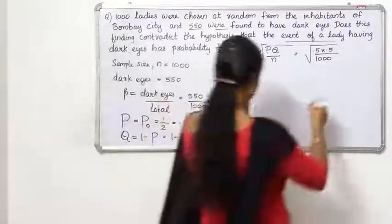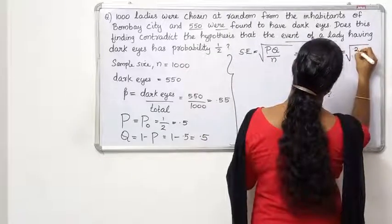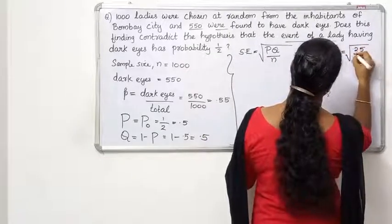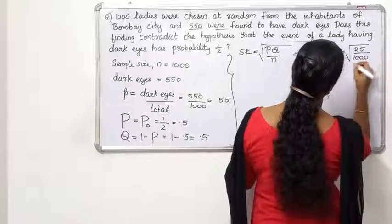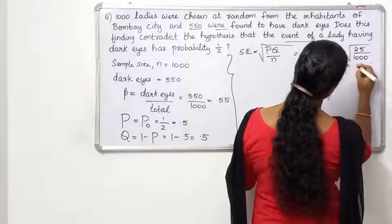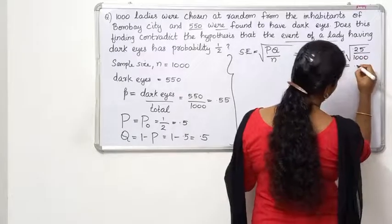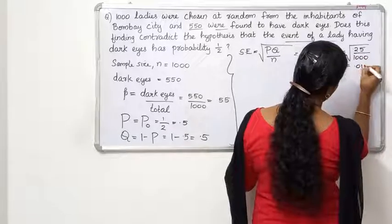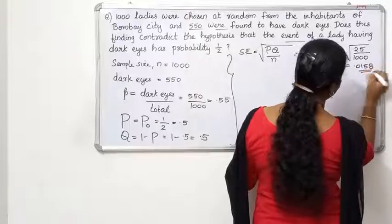The standard error equals the square root of 0.25 by 1,000, which gives us 0.0158.